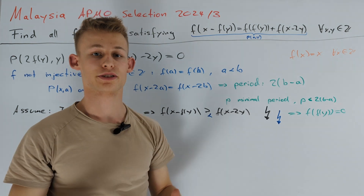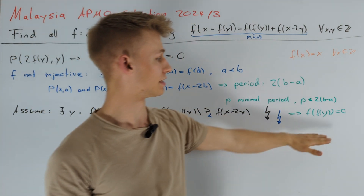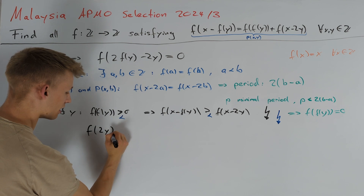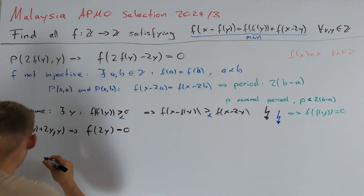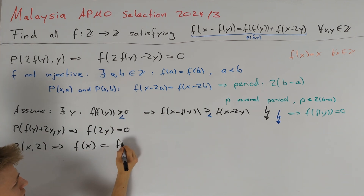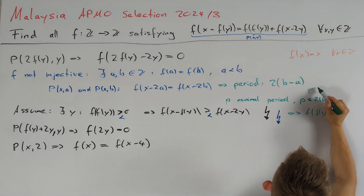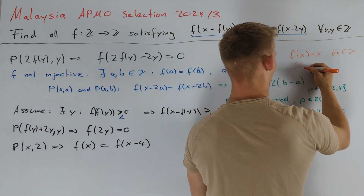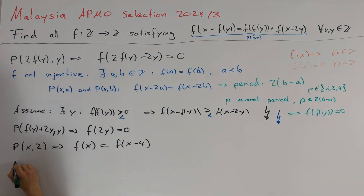This simplifies our functional equation greatly. Setting x = f(y) + 2y, we get f(2y) = 0, so f is zero for all even integers. Plugging y = 2 into the functional equation gives f(x) = f(x - 4), so our period divides 4 and p ∈ {1, 2, 4}. If p = 1, f is constant and since f attains zero, f(x) = 0 for all x. This is indeed a valid solution.